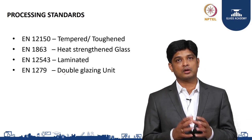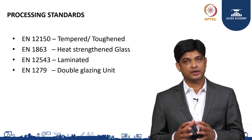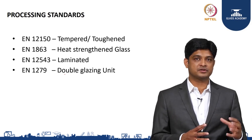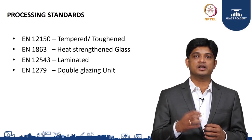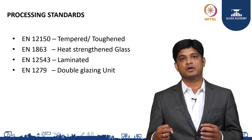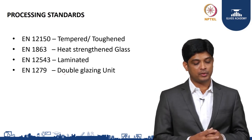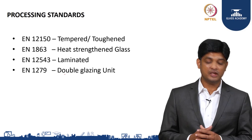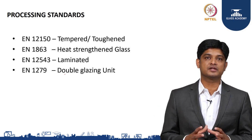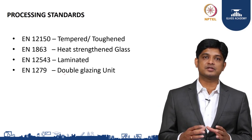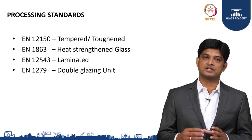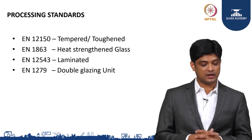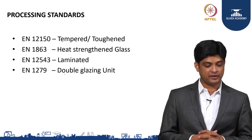For example, whether it is toughened or tempered, EN 12150 helps you understand how the process has to be done, what kind of tests have to be done, and how to evaluate whether the glass has been properly toughened or tempered. EN 1863 helps you understand the conditions for making heat-strengthened glass and defines what the breakage pattern should be.